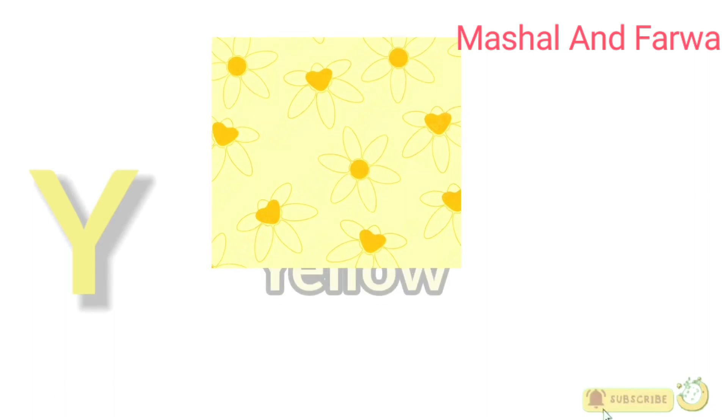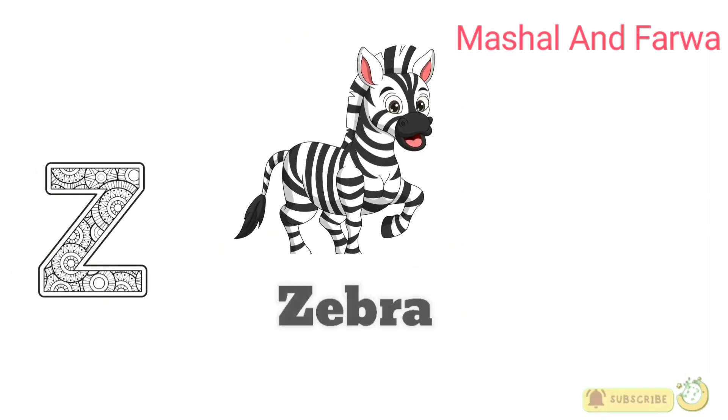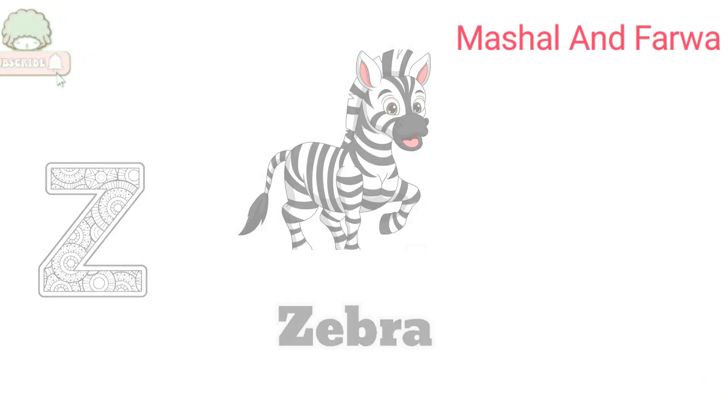Y is for yellow, y-y-y-yellow. Z is for zebra, z-z-zebra.